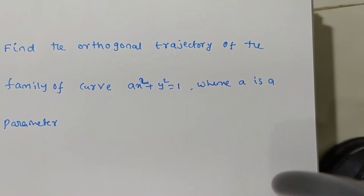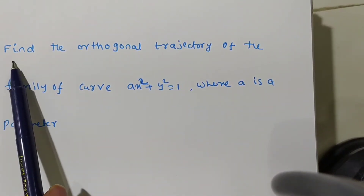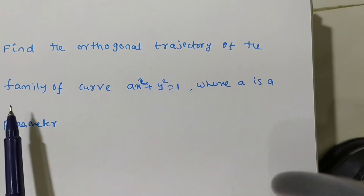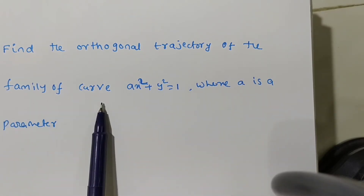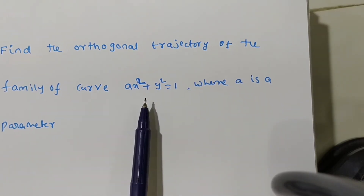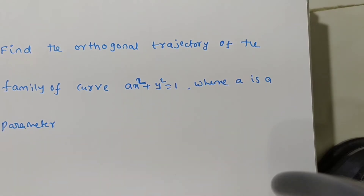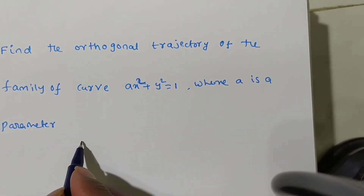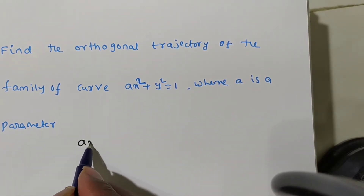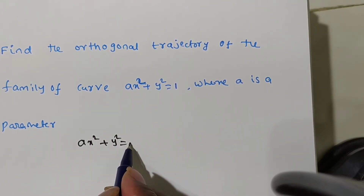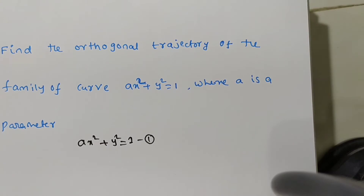The given problem is: find the orthogonal trajectory of the family of curves Ax² + y² = 1, where A is a parameter. The given family of curves is Ax² + y² = 1. Consider this as equation number 1.